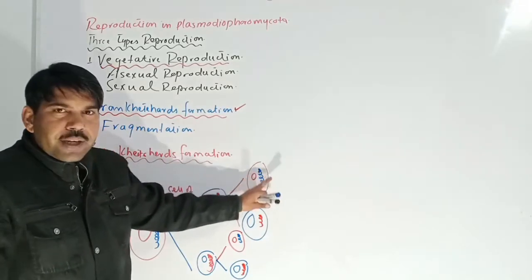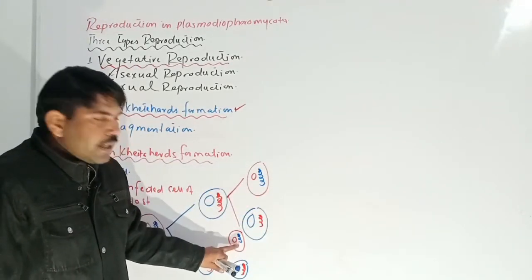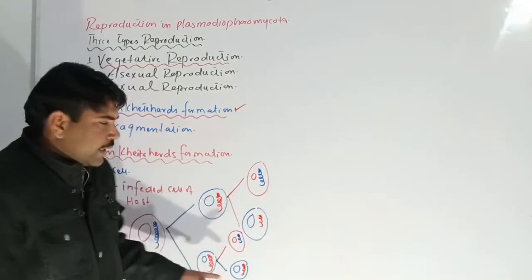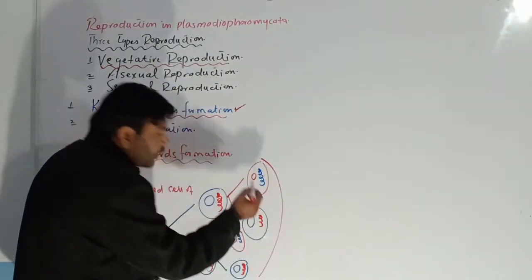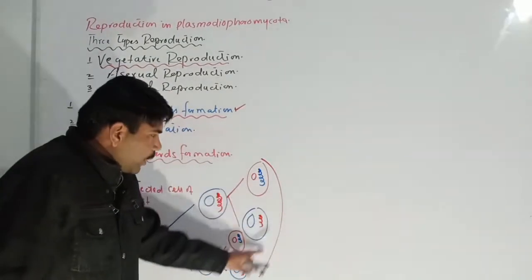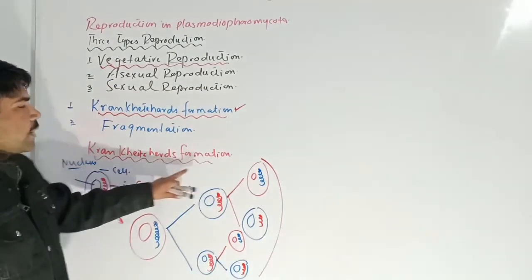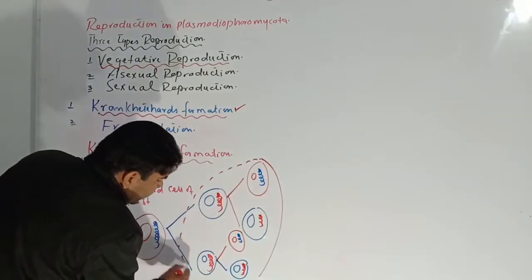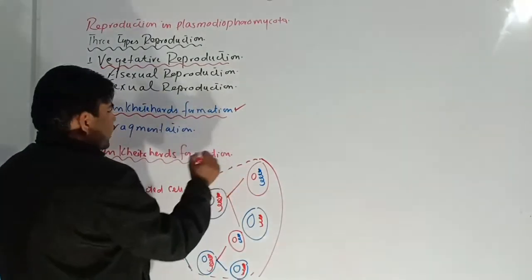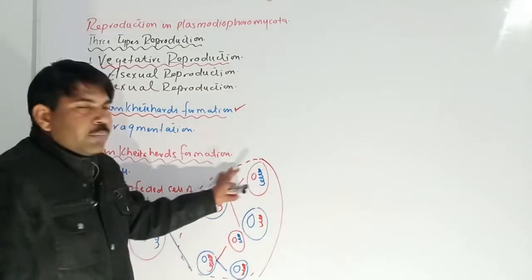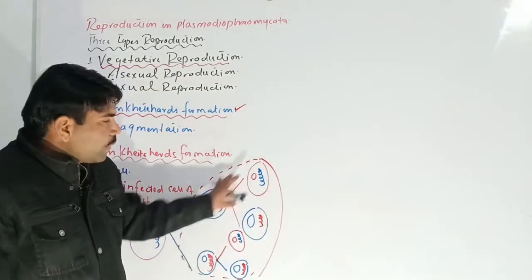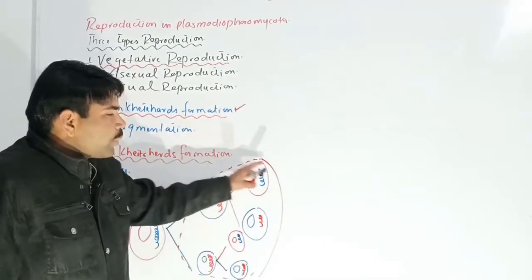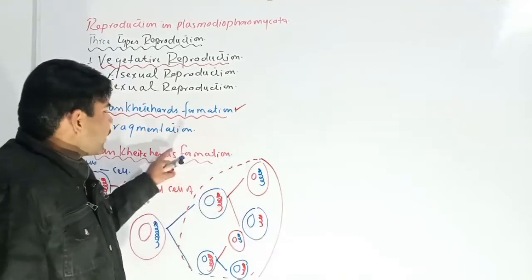Each daughter cell contains a fungus. More and more infected cells are produced through the division of the infected host cell. When a large group of cells is produced, this group is known as crinkled cells. These crinkled cells are grouped together and can go on to infect other cells.